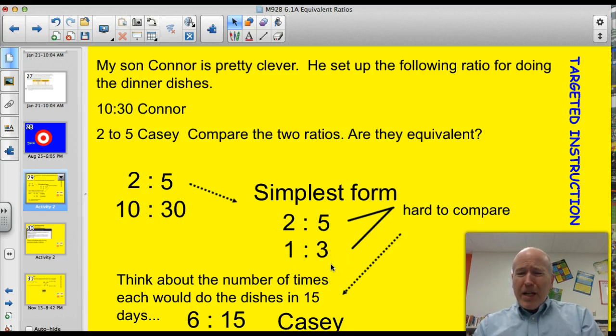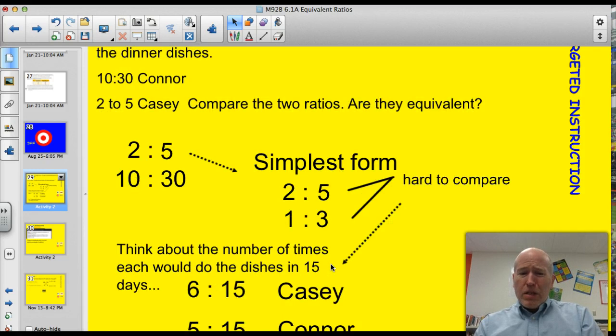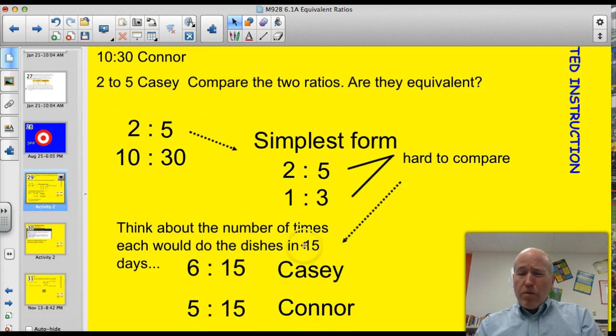Well, it's still kind of hard to compare. So let's think about the number of times each would do the dishes in 15 days. So in 15 days, that would be 3 cycles of this, so that would be 6 times in 15 days. And Connor, it would be 5 because his is a 1 to 3. So we do the same thing to both sides of the ratio. Multiply by 5 here, multiply by 5 here. We'd have 5 to 15.